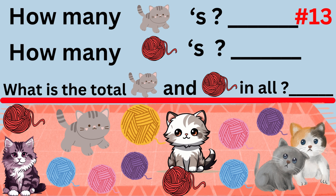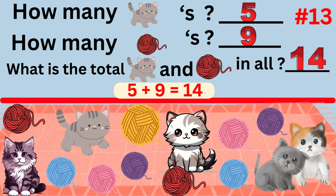Word problem number thirteen asks: how many kittens are there, how many balls of yarn are there, and how many kittens and balls of yarn in all? The answer is there are five kittens and nine balls of yarn. The total number of kittens and balls of yarn is 14 in all. The number sentence is 5 plus 9 equals 14.